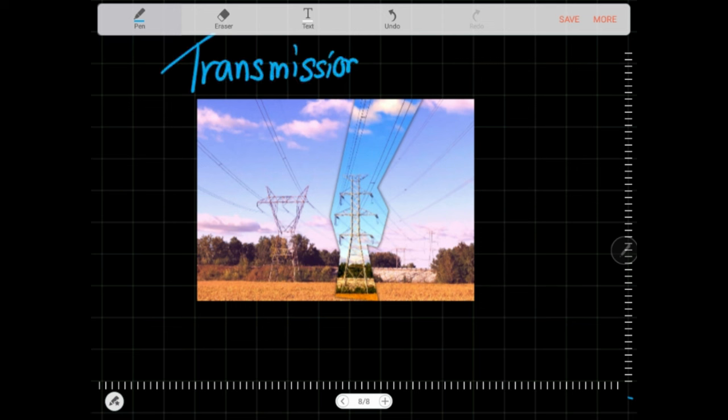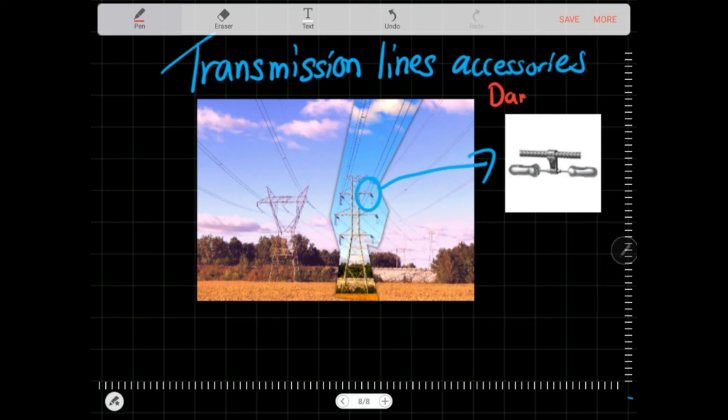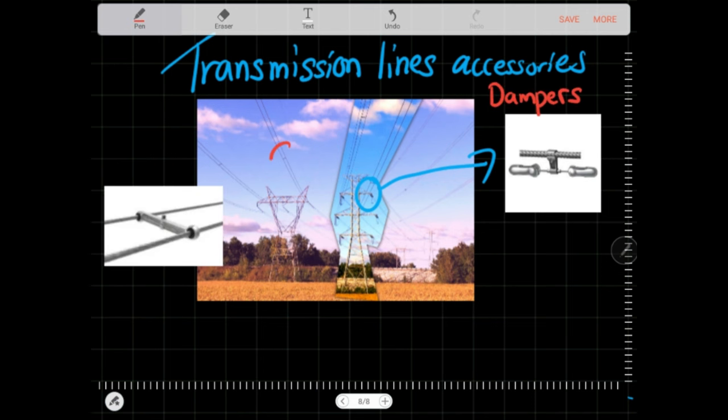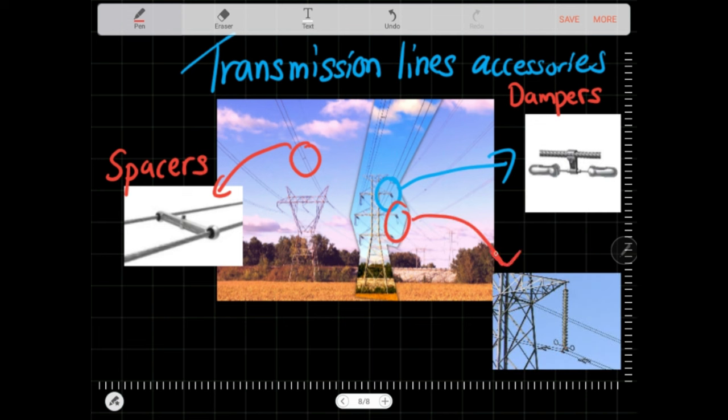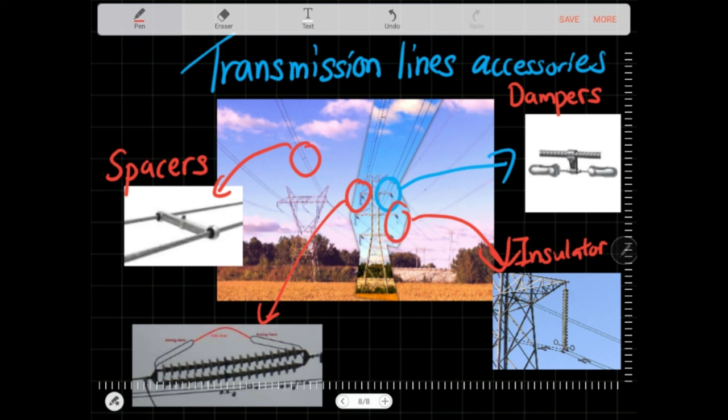Transmission lines actually require a lot of accessories to perform at their best condition. Each accessory is designed to target a certain issue and mitigate that specific issue, so that the transmission line is able to maximize their uptime and minimize their downtime.